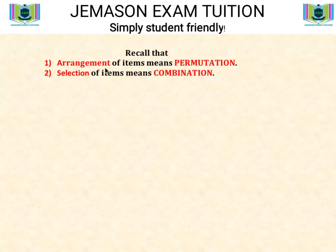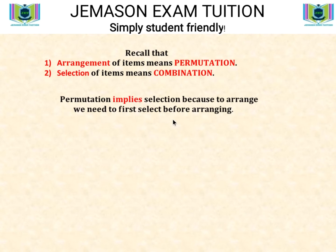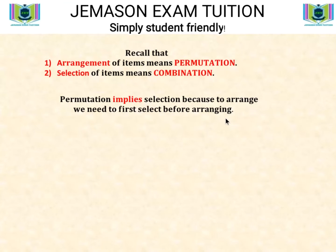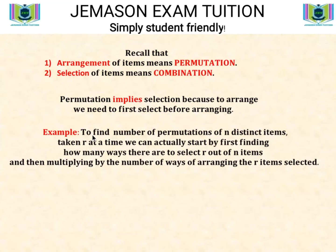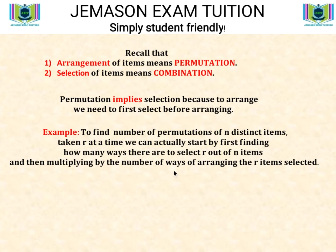If you are dealing with arrangement of items, then permutations are involved. When you are dealing with selection of items, then combinations are involved. It is also important to note that permutation implies selection, for the mere reason that in order to arrange any set of items, there is always the need to first select them before you can arrange. So to find the number of permutations of N distinct items taken R at a time, we start by finding how many ways there are to select R out of N items, and then multiply by the number of ways of arranging those selected items.